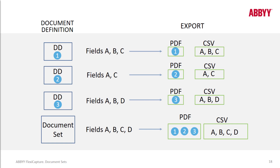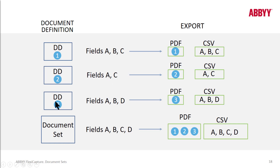You can have an export for each document definition. For Document Definition 1, we're exporting the PDF and we're also exporting fields A, B, and C. For Document Definition 2, we're exporting fields A and C to a CSV file, and we have one PDF for this second document.